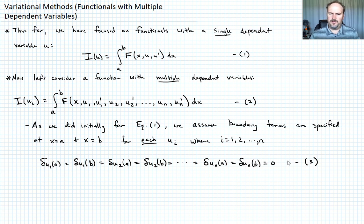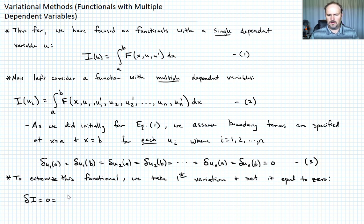Okay, so we already know how to extremize the functional. So we take the first variation and set it equal to 0. And so we end up being able to write then that delta i equals 0. And what's delta i if we go up to equation 2? Well, just like we've done before, we're going to use the chain rule with our delta operator.